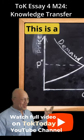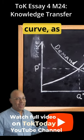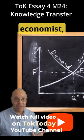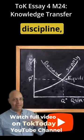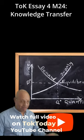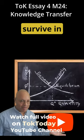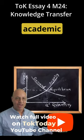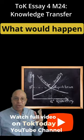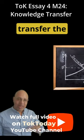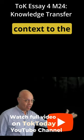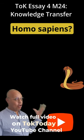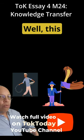This is a demand-supply curve, as constructed by an economist. Area of knowledge: human sciences. Discipline: economics. What would happen if we were to transfer the knowledge of the demand-and-supply curve from its academic context to the field context of the cobra and the Homo sapiens?